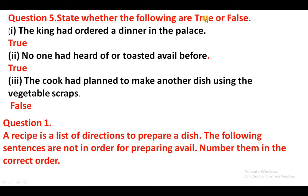Question 5. State whether the following are true or false. Jo neeche diye gaye hain, unke liye sahi aur galat likhein. The king had ordered a dinner in the palace — True. No one had heard of or tasted avial before — True. The cook had planned to make another dish using the vegetable scraps — False.